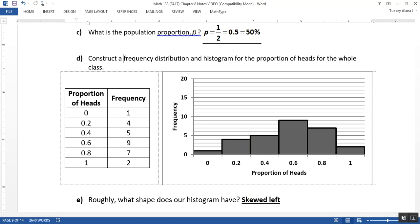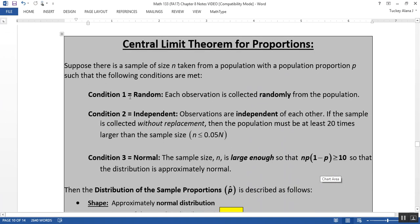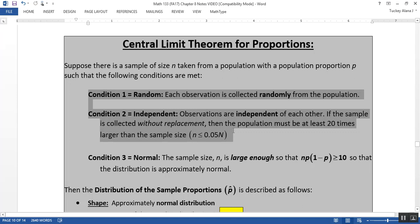So a reasonable question might be, why did that happen to us? Well, in light of the central limit theorem, let's say about our conditions. It was definitely random because people were tossing those coins randomly, and they're independent because coin tosses are always independent of each other.